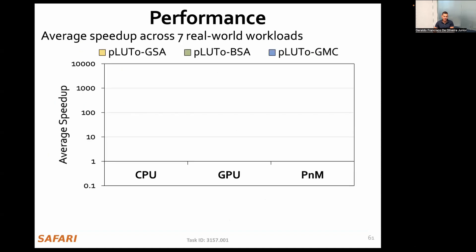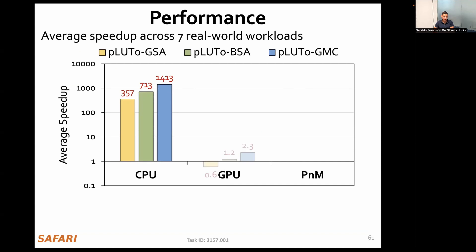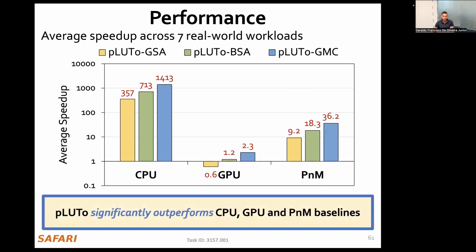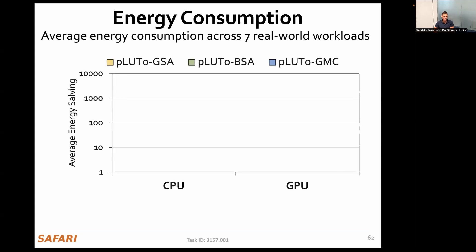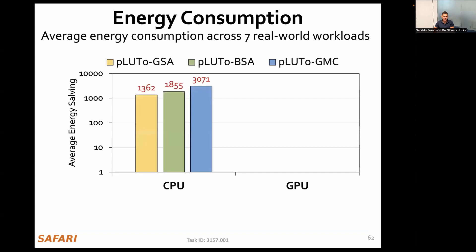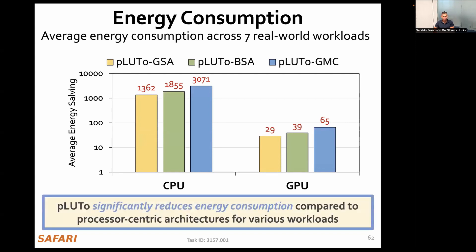In terms of performance, on average across all workloads, Pluto achieves up to 1400 times the performance of the CPU, two times the performance of a GPU, and 36 times the performance of a processing-near-memory accelerator. We conclude that Pluto significantly outperforms all baselines. In terms of energy, on average across all workloads, Pluto reduces energy by 3000 times compared to the CPU and 65 times compared to the GPU. We conclude that Pluto significantly reduces energy consumption compared to processor-centric architectures.